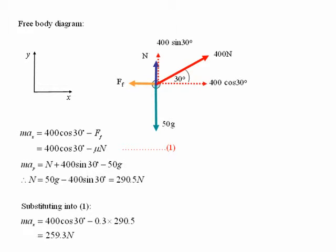We now substitute that back into equation 1. We get that max equals 400 cos 30 degrees minus 0.3, the coefficient of friction, times 290.5.